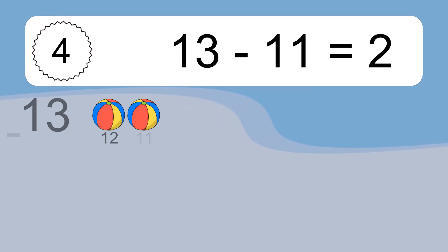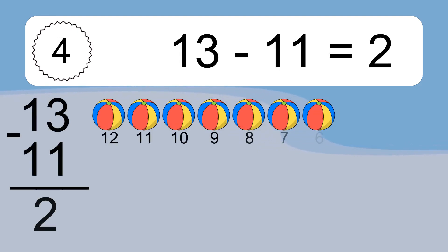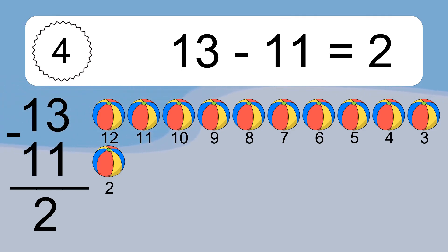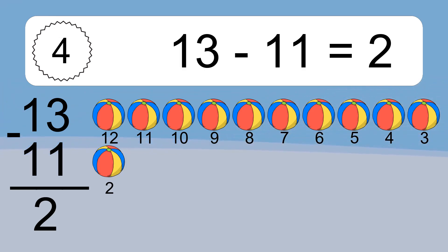13 minus 11 equals what? 13 minus 11 equals 2. Let's count it: 12, 11, 10, 9, 8, 7, 6, 5, 4, 3, 2.